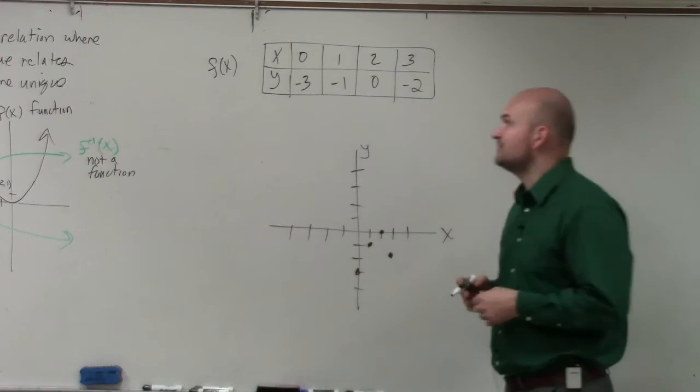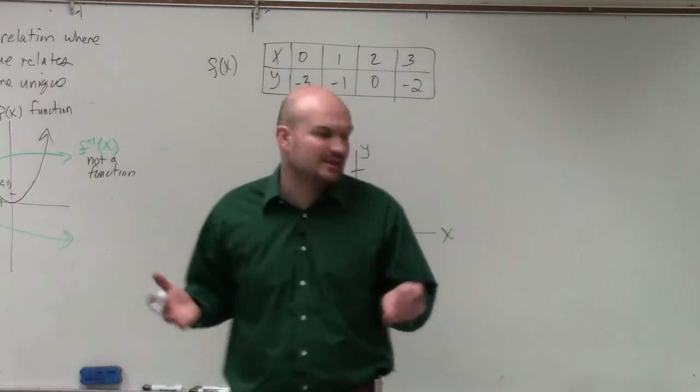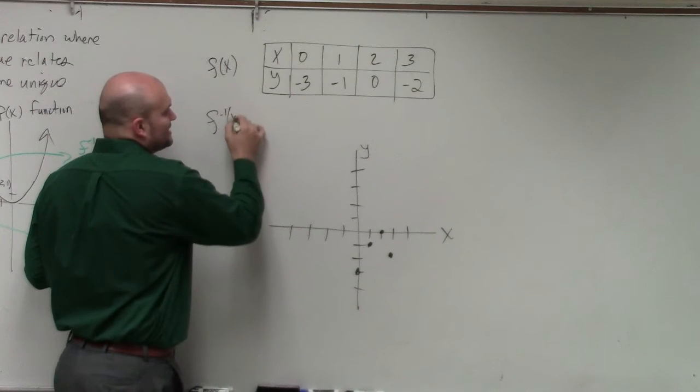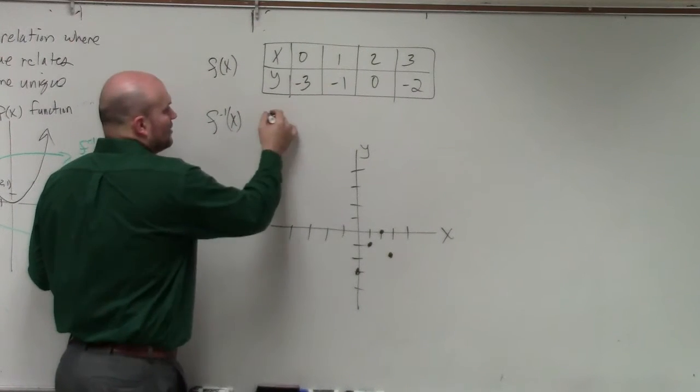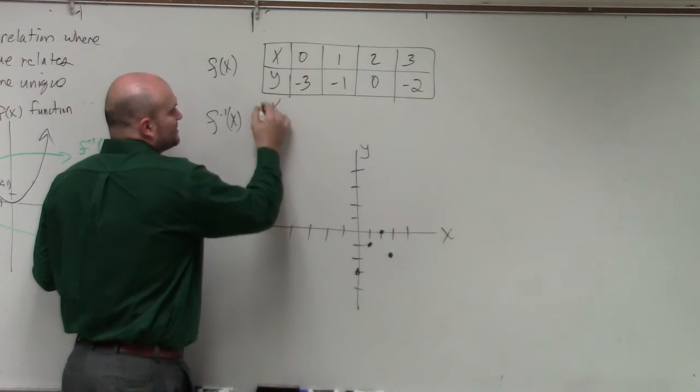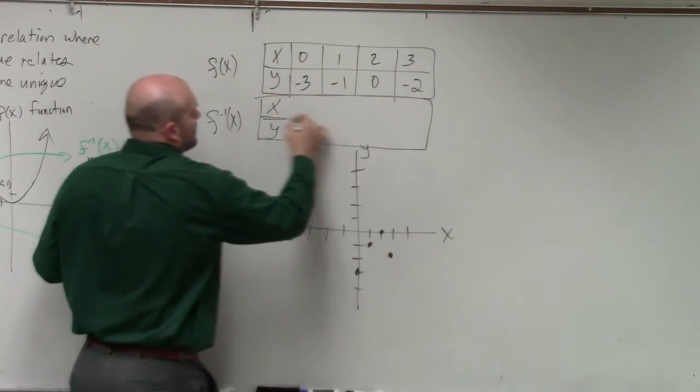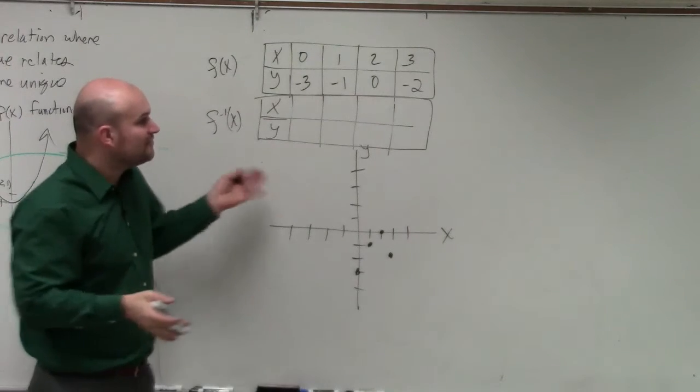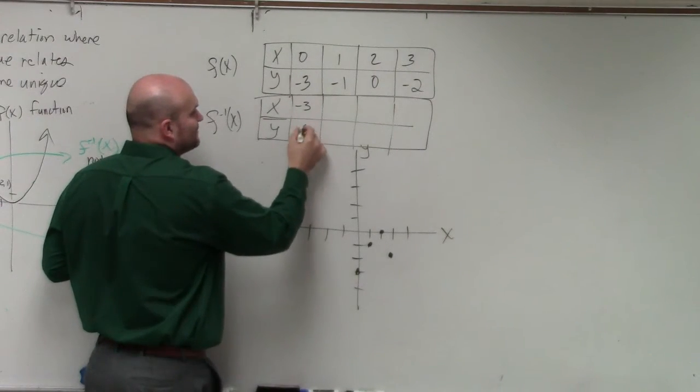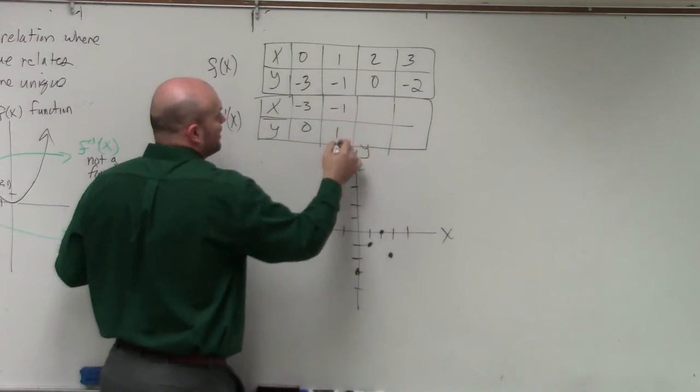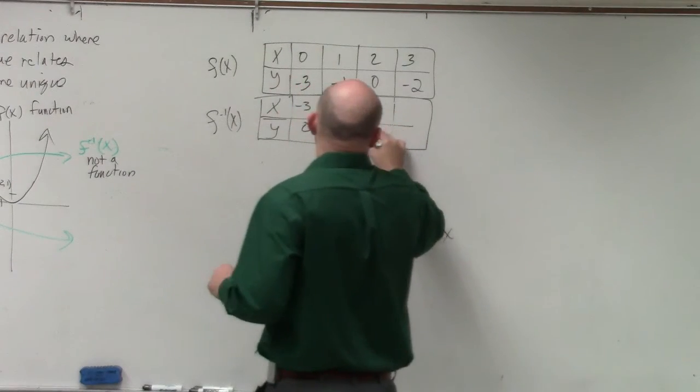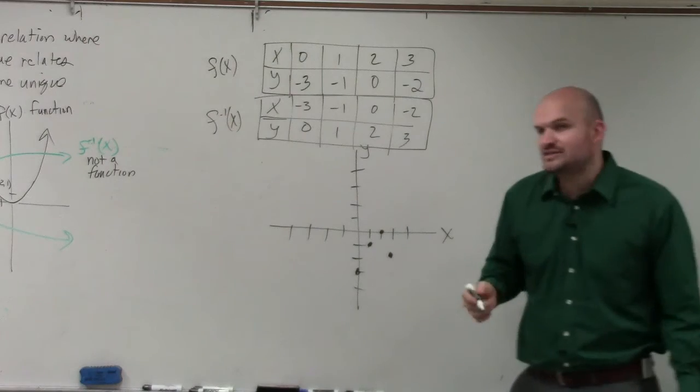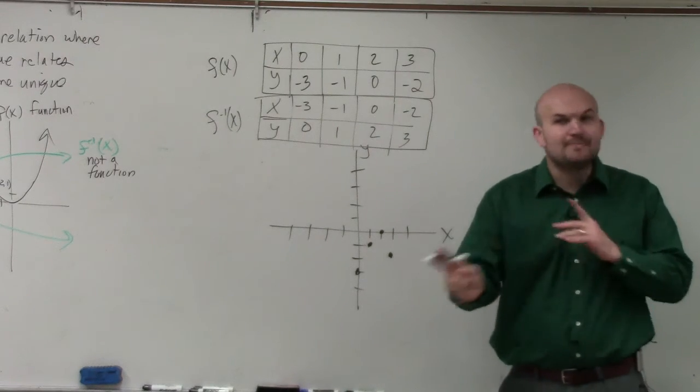Now it might be easier to connect them if you want to. But all we had to do for the inverse, if you guys remember when we were talking about graphing, the inverse is just the x and the y coordinates flipped. All we did was flip them. So now it's negative 3, 0. Now it's negative 1, 1. Now it's 0, 2. And now it's negative 2, 3. You guys see what I did to find the inverse? You just swap the x and the y.